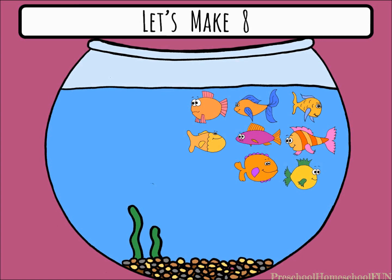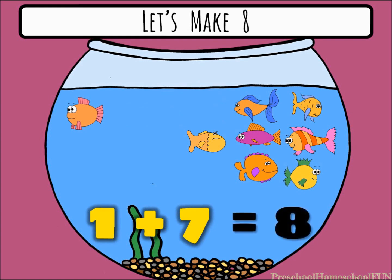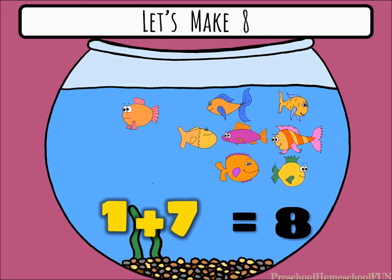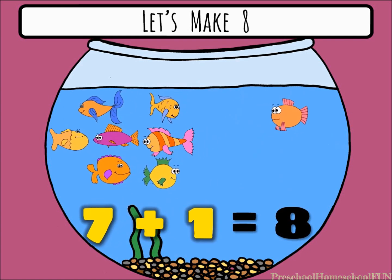Here's our eight fish. If one fish swims to the side, we have one fish on the left and seven on the right. If our fish swim around and trade places, we have seven plus one equals eight.